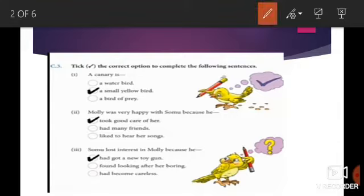Number one: A canary is a water bird, a small yellow bird, or a bird of prey? I hope you remember a canary is a small yellow bird. The correct answer is already ticked. Number two: Molly was very happy with Somo because he took good care of her, had many friends, or liked to hear her songs. First you should remember who was Molly. Yes, Molly was the name of canary, the name of that small yellow bird.